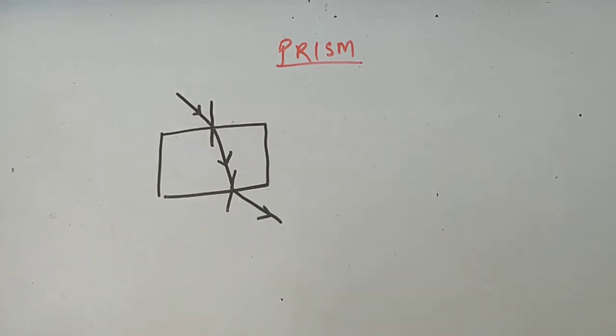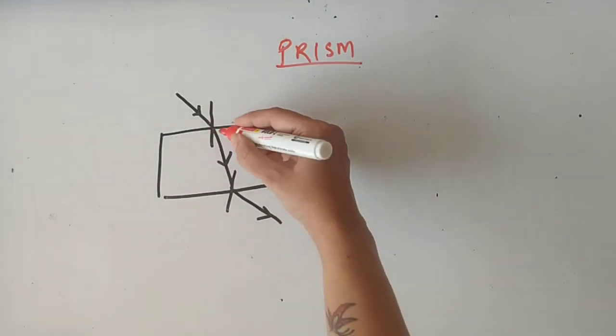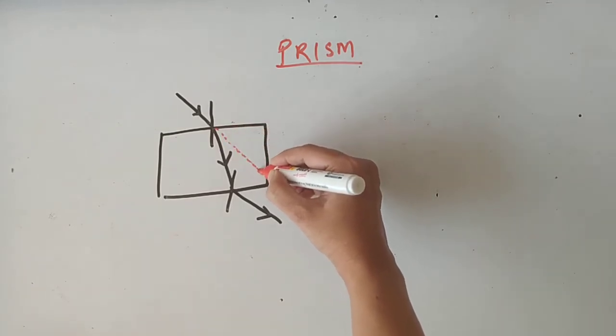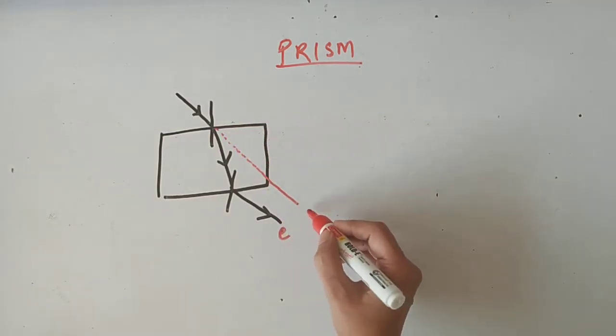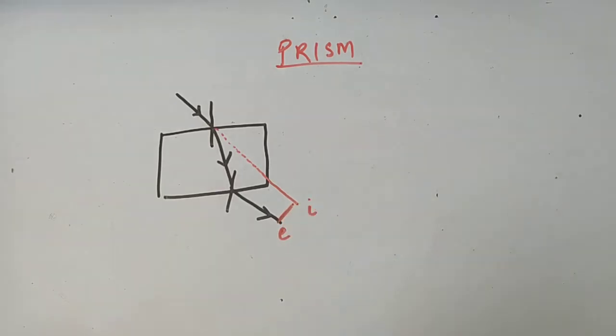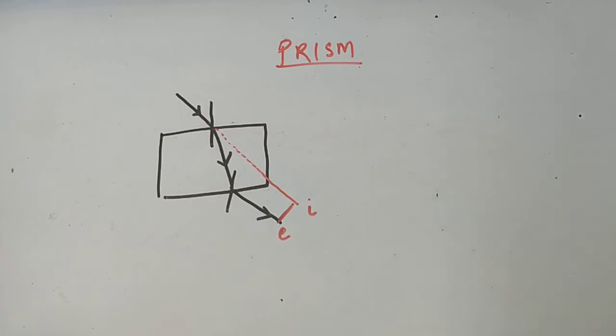If you extend this incident ray, it will be parallel to the emergent ray, and the distance between these two is called lateral displacement. We have seen this in refraction.